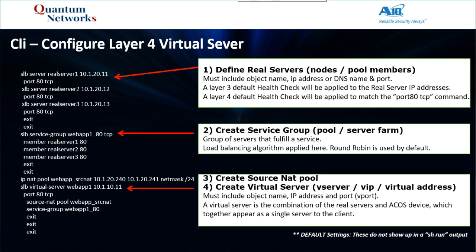Step one again: when we say define real servers, this will be the same as nodes or pool members on a competitor's device. It must include an object name, an IP address or DNS name, and a port. A Layer 3 default health check will be applied to the real server IP addresses, and a Layer 4 default health check — a TCP health check — will be applied to match the port 80 TCP command. By looking at the command snippets, I didn't specify any health checks. If you do not specify a health check, by default those two health checks come into play. Those default configurations will not show up in a show run output — you'll have to run the show run with hyphen default command to see those. Very important.